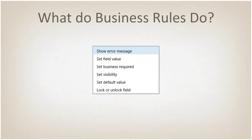So what can we do with a business rule? We've got a handful of things. We can show an error message, set a field value, set the business requirement level, set the visibility of a field, set the default value, and make the field read-only or not. These are the things available to us right now — this is the entire list. We can't actually change this, and custom business rule actions are not available at this point in time.